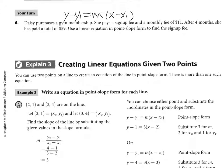So, we have to identify the information from the problem. Daisy purchases a gym membership. She pays a sign-up fee and a monthly fee of $11. What's that monthly fee representing? That is my slope. It's $11 per month. It doesn't say the word per, but it's implied. Anytime we say per, that means slope. After four months, she's paid a total of $59. That now represents a point, a coordinate.